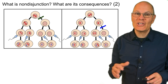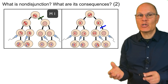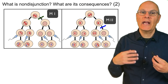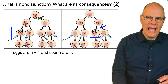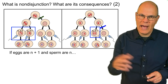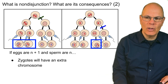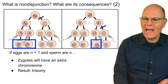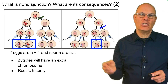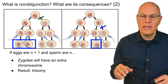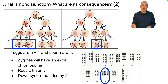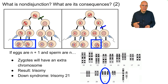Nondisjunction during meiosis 1 or meiosis 2 can result in gametes that have an abnormal number of chromosomes. If the eggs are n plus one — they have the haploid number plus one more — then the zygote will have an extra chromosome, and what we have is a trisomy. Instead of a homologous pair with 2, we have 3. The most famous example is Down syndrome, which is a trisomy of the 21st chromosome, with various developmental consequences and developmental delays.